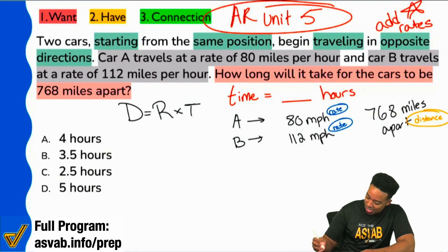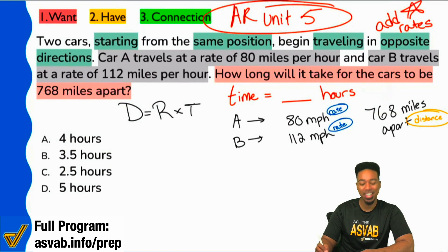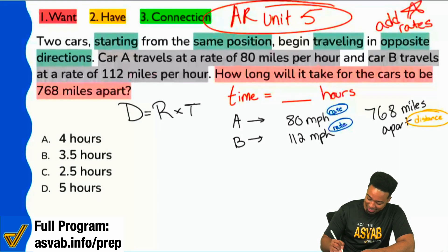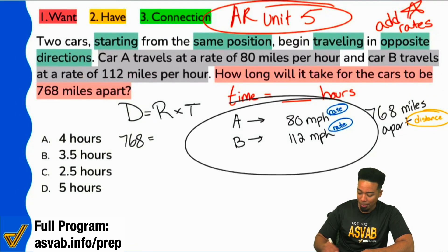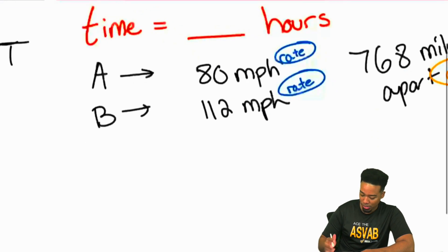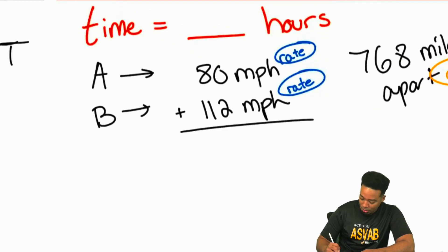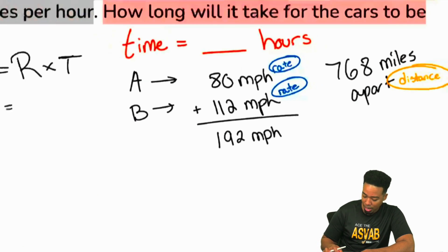Here we go, my party people. So the distance that we're trying to travel, again, is given to us right here, is 768. And then we have our rate multiplied by time. Our rate that we're given is going to be the sum of these two rates given to us. So if we add these together, we are going to have ourselves 192 miles per hour.